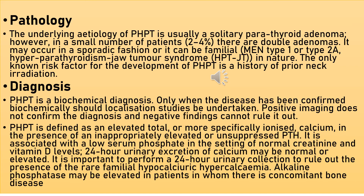The underlying etiology of primary hyperparathyroidism is usually a solitary parathyroid adenoma. However, in a small number of patients — 2-4% — there are double adenomas. It may occur in a sporadic fashion or be familial, such as MEN type 1 or type 2A, or hyperparathyroidism jaw tumor syndrome. The only known risk factor for development of primary hyperparathyroidism is a history of prior irradiation.